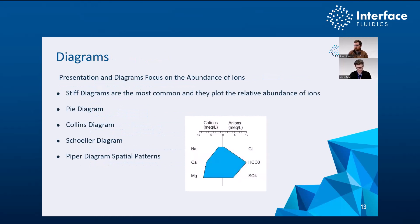Along with these data sets, you'll often see different types of diagrams on water reports. The most common is probably the Stiff diagram — it communicates the charge equivalence of each ion. It doesn't tell you whether water will be useful for a given process or communicate scaling tendency; it's just communicating graphically how much charge there is for a specific ion. Pi diagrams, Collins diagrams, and others do the same thing in different formats.